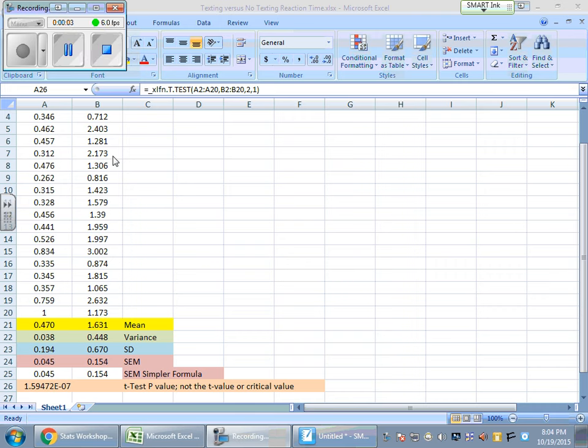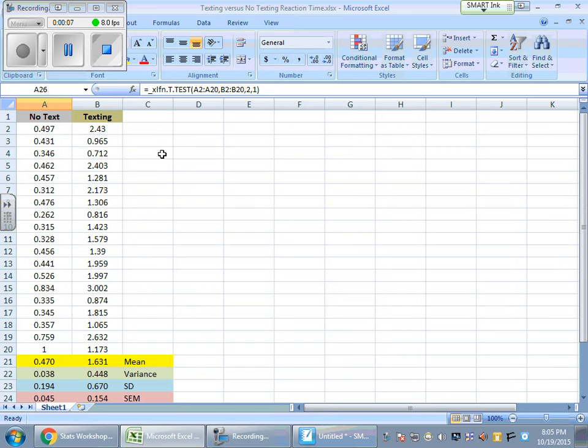Hello, this is a quick video to try to help clear up some problems with the t-value. Here we have a column of no texting data and we have a column of texting data.